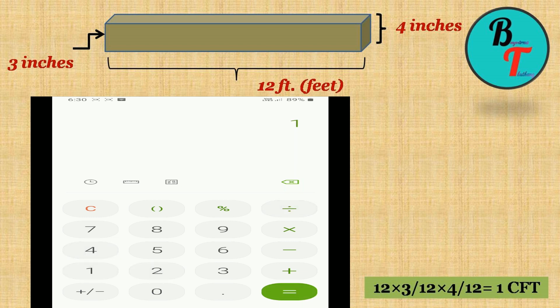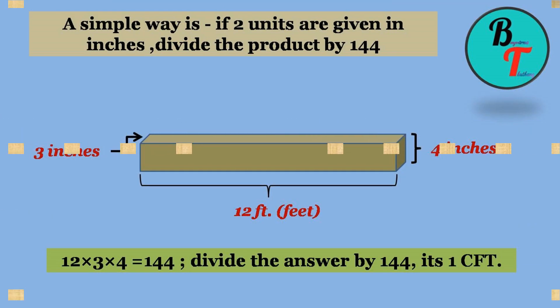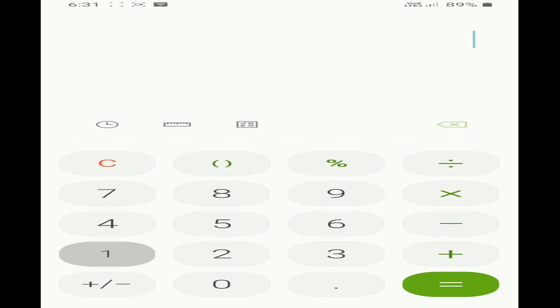If converting the inches into feet is not comfortable for you, multiply all the given values if two are given in inches and length in feet without considering the units, then divide by 144. You shall get your value in CFT. 12 into 3 into 4 equals 144. 144 divided by 144 equals 1.